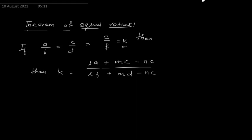So if A/B = C/D = E/F, we can consider this equal to K. Then K will also be equal to (LA + MC − NE) upon (LB + MD − NF). The number by which I multiplied the numerator is the same number by which I multiplied the denominator.